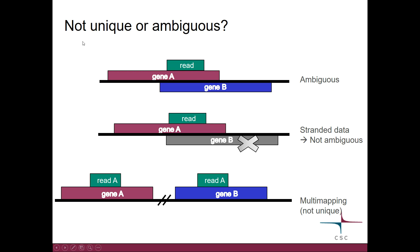It can be confusing when we talk about multi-mapping reads and ambiguous mapping reads, so let's look at some examples. Here we have a piece of genome. In this particular area there are two genes, A and B. Our read — the green box — maps to a point where it actually overlaps with both gene A and gene B. This situation we call ambiguous because we cannot tell with confidence from which gene this read came.